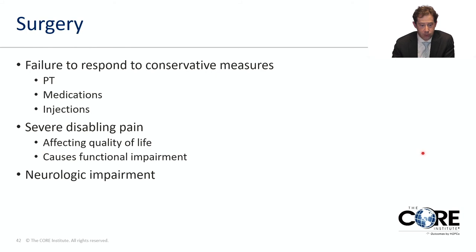Surgery is the last resort for patients who have failed conservative measures — physical therapy, medications, and injections — and have severe debilitating pain affecting quality of life and causing functional impairment. Patients with severe neurologic impairment are treated more aggressively because we don't want the neurologic impairment to become permanent.